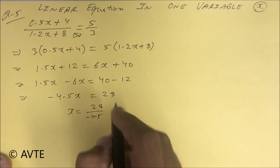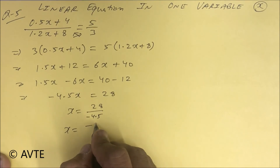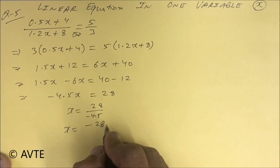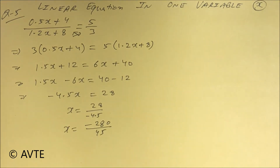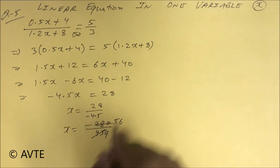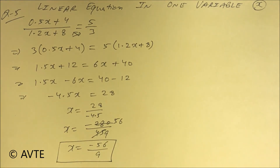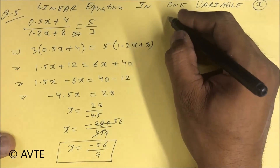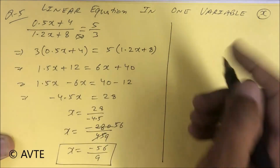So x equals 28 upon minus 4.5, that is x equals minus 280 upon 45 because the decimal sign moves up. We cut down by 5: this gives 9 and 56, so the value of x is minus 56 upon 9.